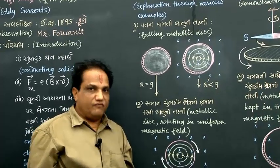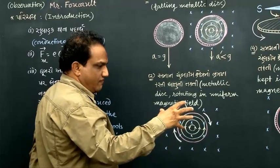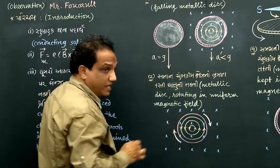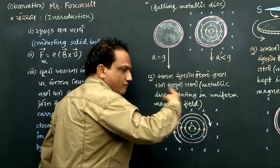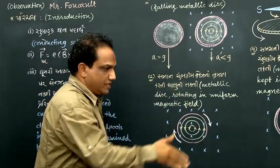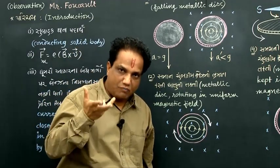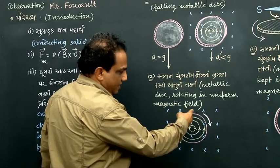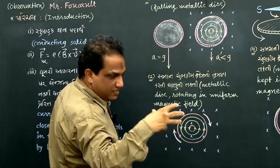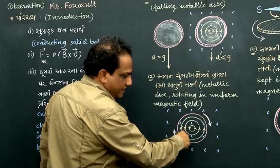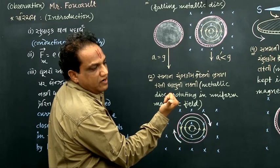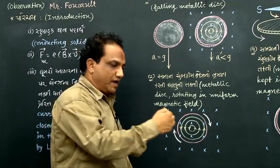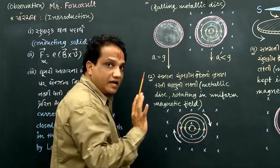Let us consider a second example where eddy currents are produced. Consider again a uniform magnetic field applied perpendicularly inside the plane of the figure, in which there is a metallic disc which is rotated clockwise. When you rotate it clockwise, it cuts the magnetic field lines. Whenever magnetic flux is cut by a conducting body, eddy currents will be produced. Here, when you view from the front side, the direction of the eddy currents is anti-clockwise, so they produce their own magnetic field outside — opposite to the applied magnetic field inside.